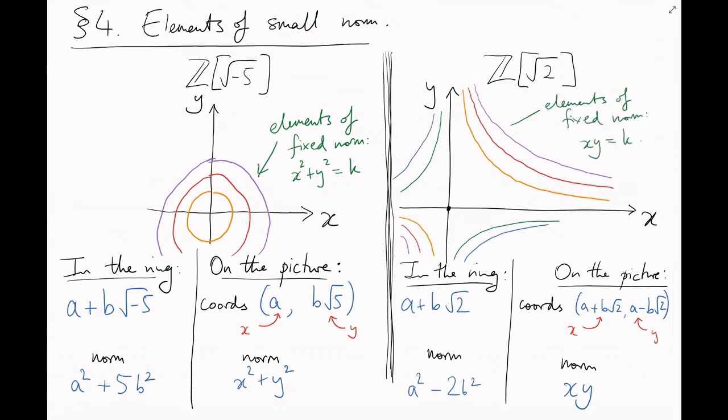Now these pictures really highlight the difference between the geometries of real and imaginary quadratic extensions. Okay, so what does this tell us about arithmetic in these rings?